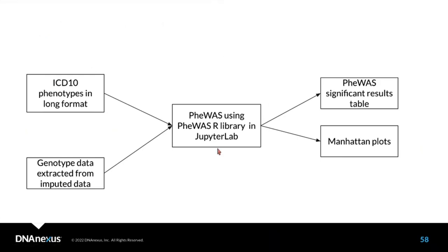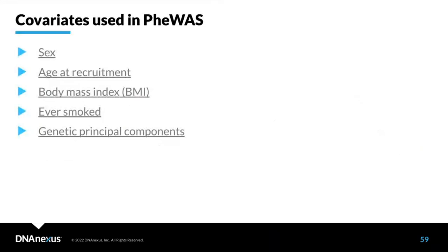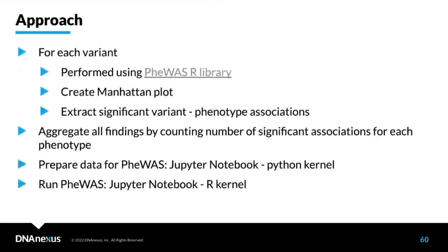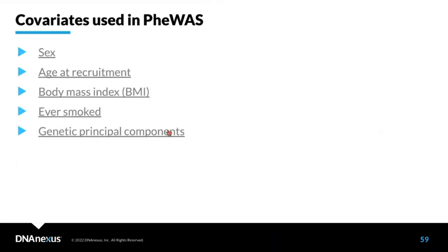We aggregate results across all 82 runs since each iteration uses different genotype data for each of the 82 index variants. The covariates used in PheWAS are slightly fewer than in GWAS — we exclude anything directly connected to the diseases, such as age when high blood pressure was diagnosed. It would be interesting to hear from the community what logic others use for selecting covariates in PheWAS analysis.